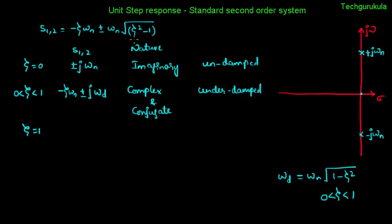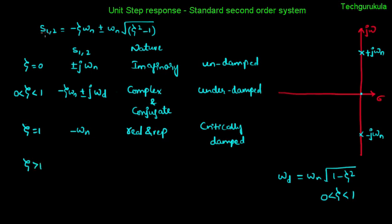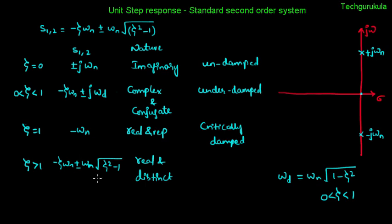For zeta equal to 1: the square root term becomes zero, leaving s1 = s2 = minus omega_n. The two roots are real and repetitive. This case is called critically damped. For zeta greater than 1: the roots are s1,2 = minus zeta omega_n plus or minus omega_n times square root of (zeta squared minus 1). The roots are real and distinct, since the second term is a positive value added and subtracted. This case is called overdamped.